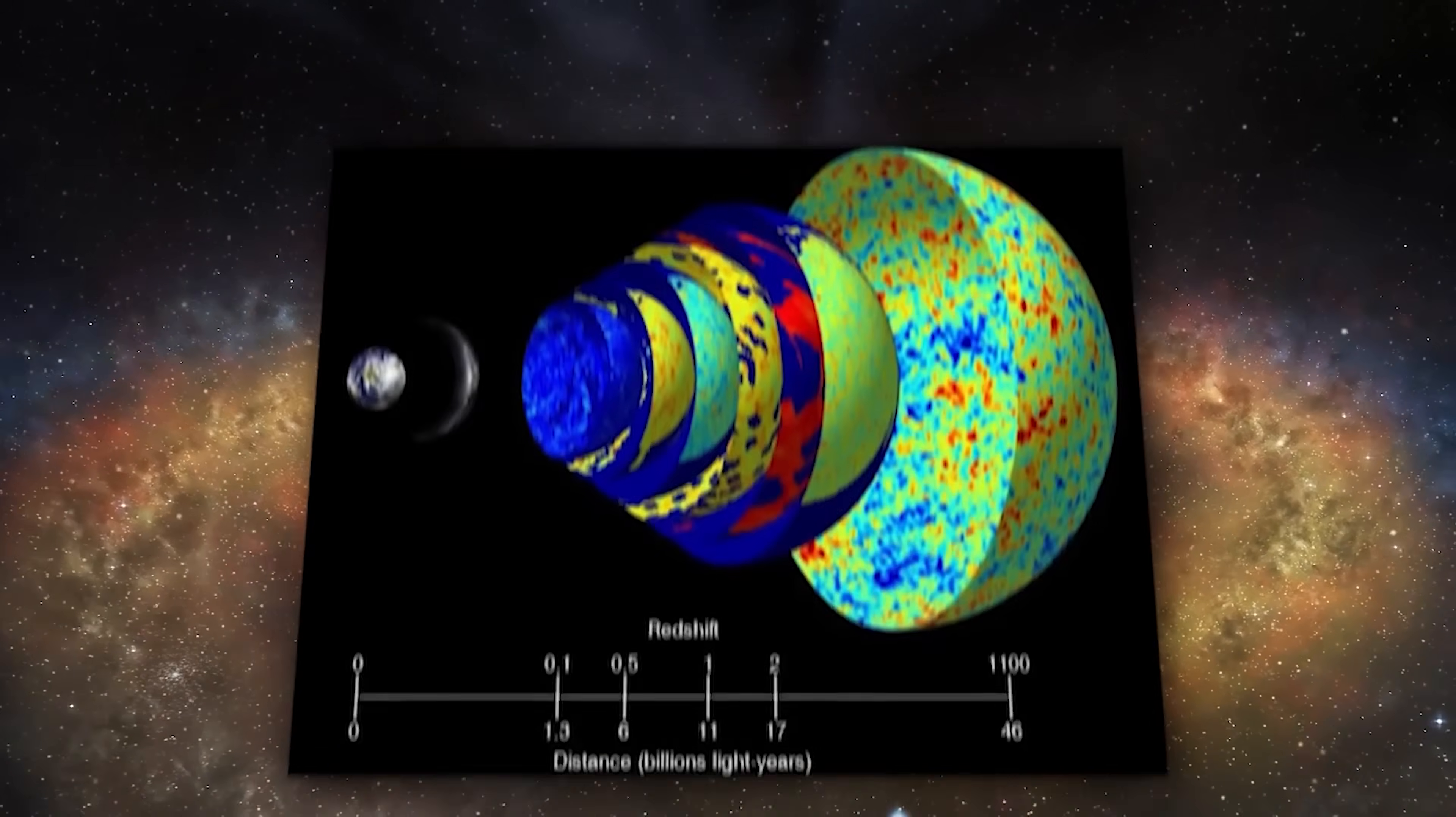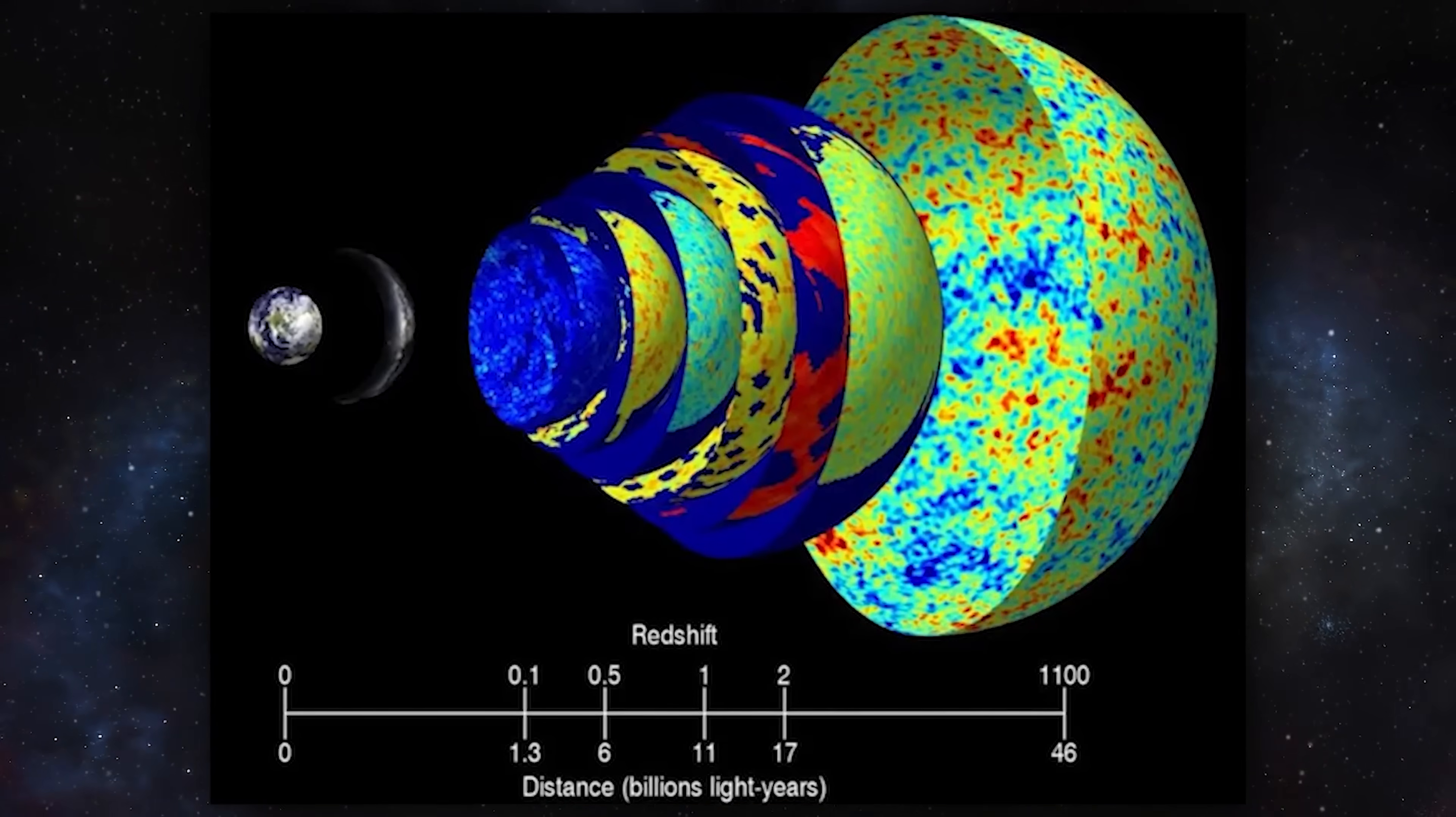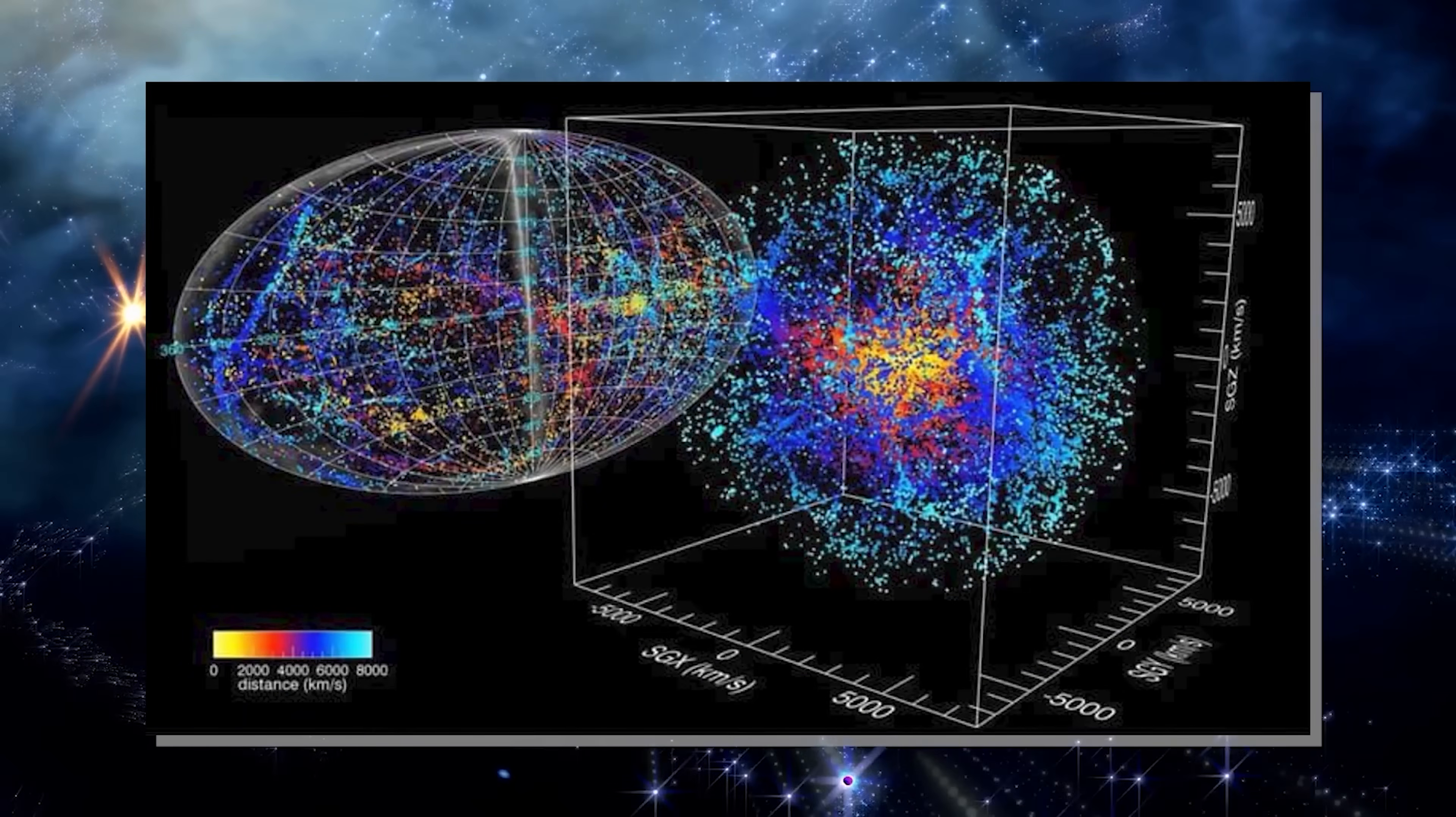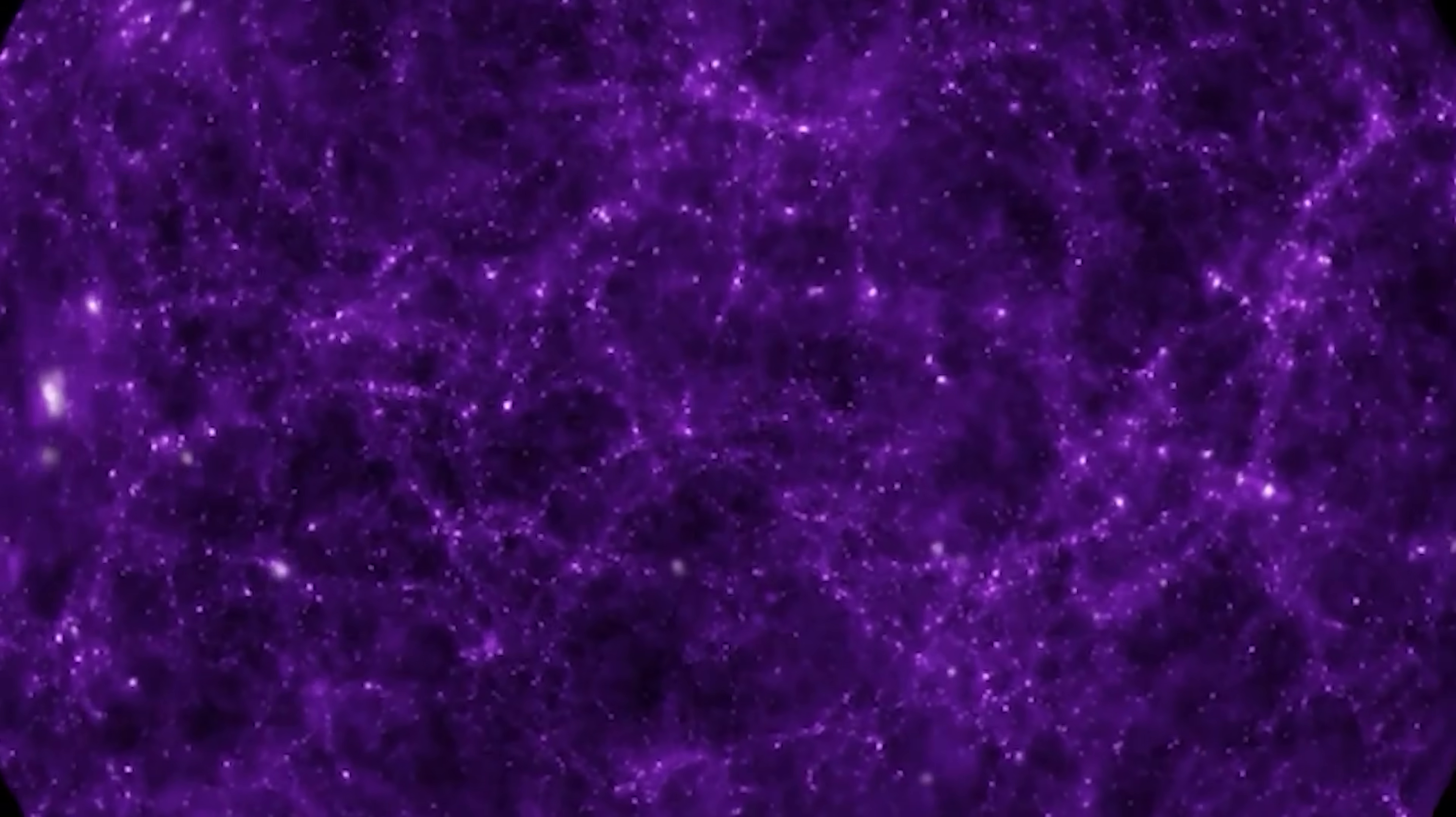The Big Bang itself has never been observed, only inferred from indirect signals like the cosmic microwave background, widely regarded as its echo. Until Webb, we assumed the cosmic microwave background and redshift measurements supported a universe that was smooth, uniform, and expanding from a single origin point.